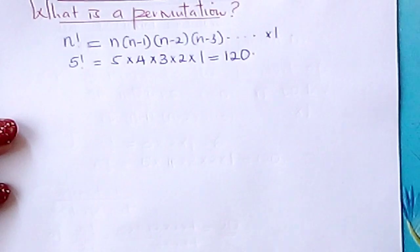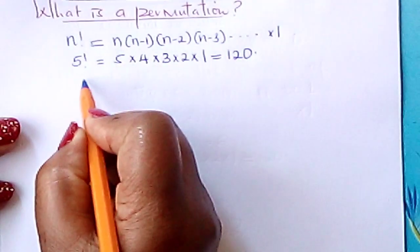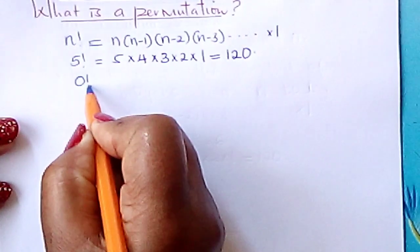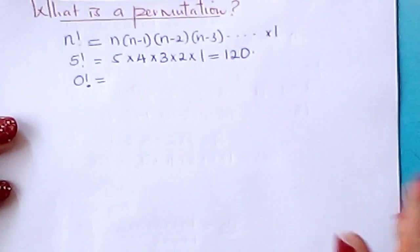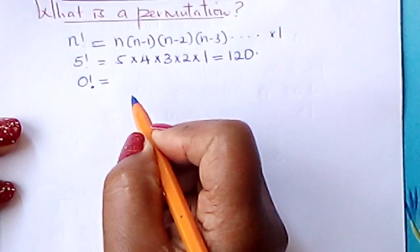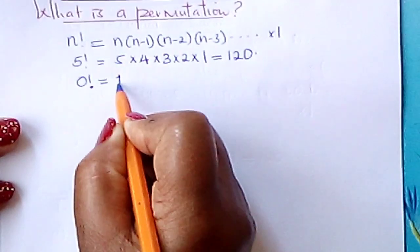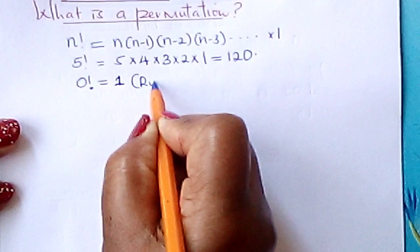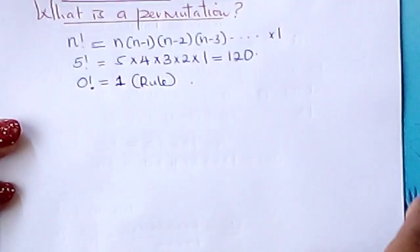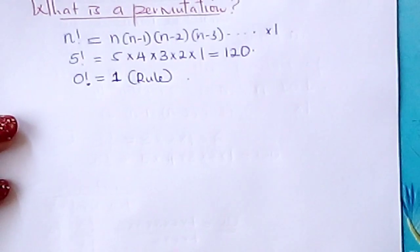Something that I didn't tell you last time, and I want to put it clear here, is about 0 factorial. Suppose you have 0 factorial. 0 factorial would be equal to what? There is a conventional rule that states that 0 factorial is equal to 1. This is a rule that 0 factorial, whenever you come across it, is equated to 1.